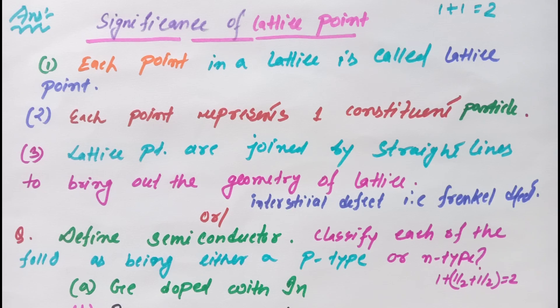Number one, each point in a lattice is called lattice point. Secondly, each point represents one constituent particle. Lattice points are joined by straight lines to bring out the geometry of the lattice. And interstitial defect, that is Frenkel defect, will increase the density of a crystal.